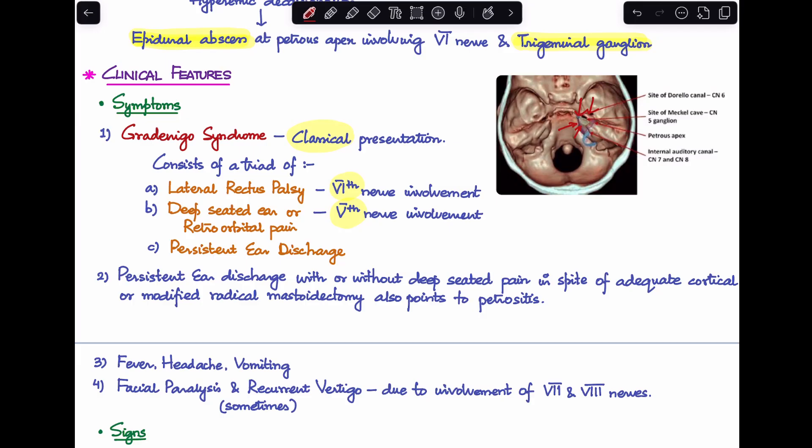So these are the three features that you see in a case of Gradinigo's syndrome triad, which is a classical presentation in petrositis. Now you can remember these three features by this mnemonic: EAR. E is for ear discharge, A is for abducens nerve palsy, and R is for retroorbital pain.